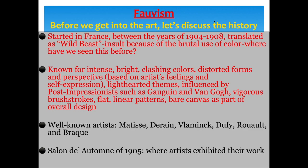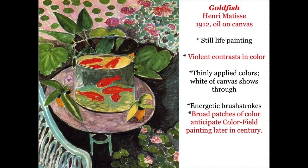Our first movement is Fauvism, which was actually a negative name meaning 'wild beast.' It is known for really intense and bright colors that often clash, distorted forms or distorted perspective, and light-hearted themes. The Fauves were influenced by Post-Impressionists like Gauguin and Van Gogh. You'll see rigorous brushstrokes, flat linear patterns, and sometimes bare canvas. This movement took place between 1904 and 1908 and was seen as an insult due to the brutal use of color.